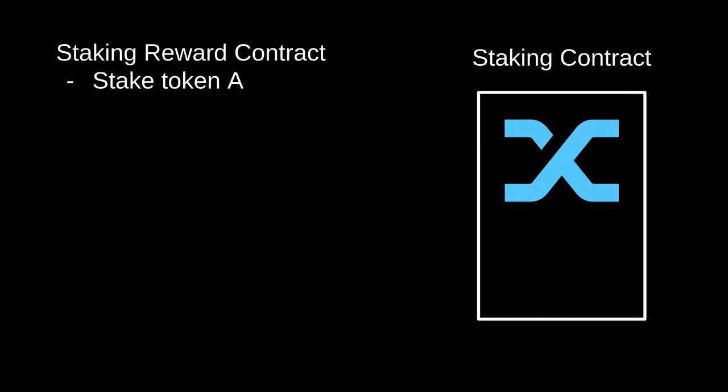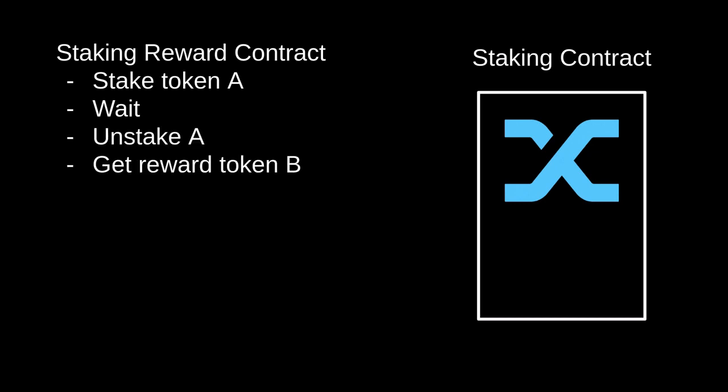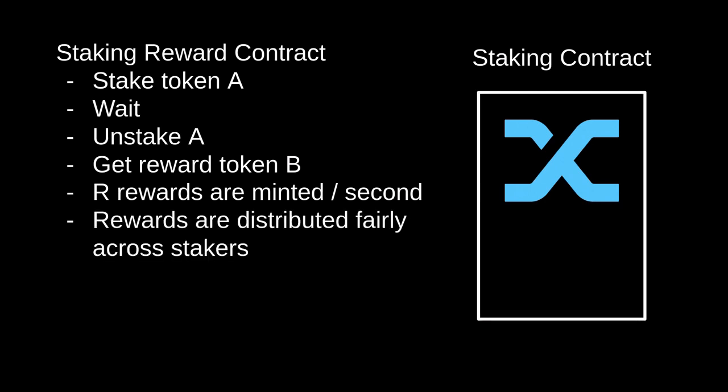The Synthetic Staking Reward Contract allows you to stake a token — we'll say token A — into this contract. You can deposit token A into the staking contract and later claim another token as the reward for staking token A. Once you have the token staked, you can wait and unstake token A at any time, at which point you can get token B as the reward. A fixed amount of reward is minted per second — we'll call it R rewards per second — and the rewards are distributed fairly across stakers.